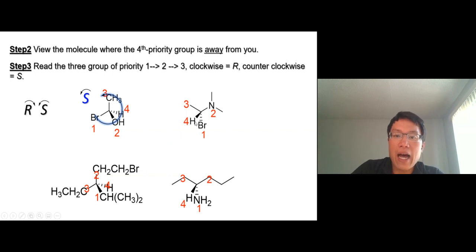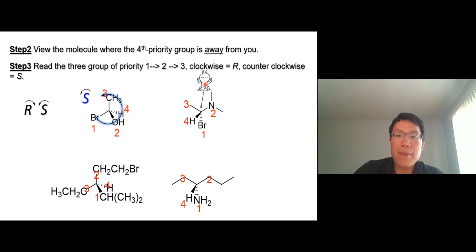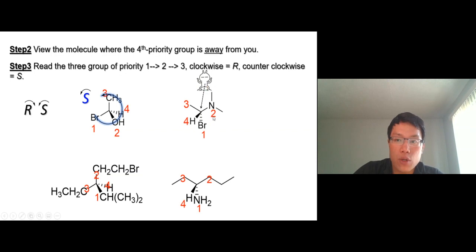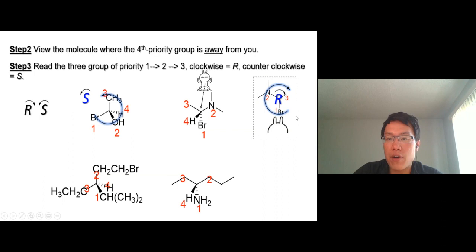In the case where the fourth priority is pointing towards you, you have to look at the molecule from the opposite direction — from the back — because the fourth priority must be away from you. If you look from the back, the nitrogen will be on his left hand, the carbon on his right hand, and bromine at the bottom. Reading one, two, three goes clockwise — that looks like an R. So this is R.